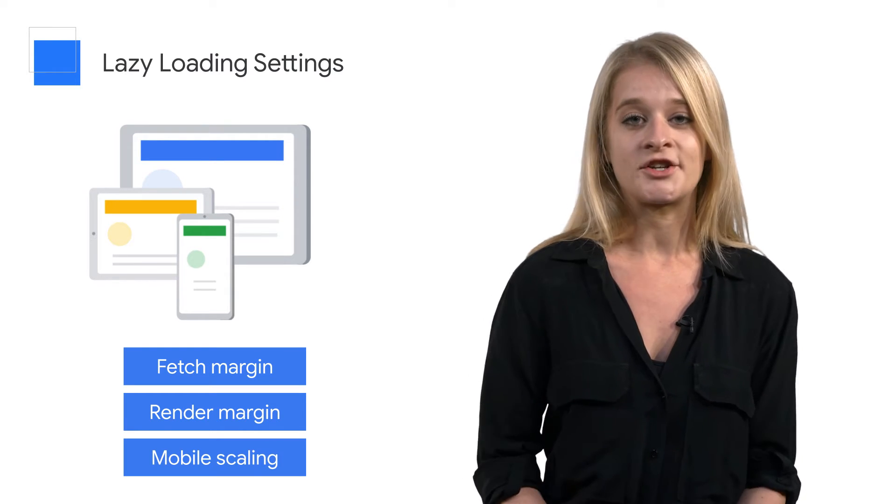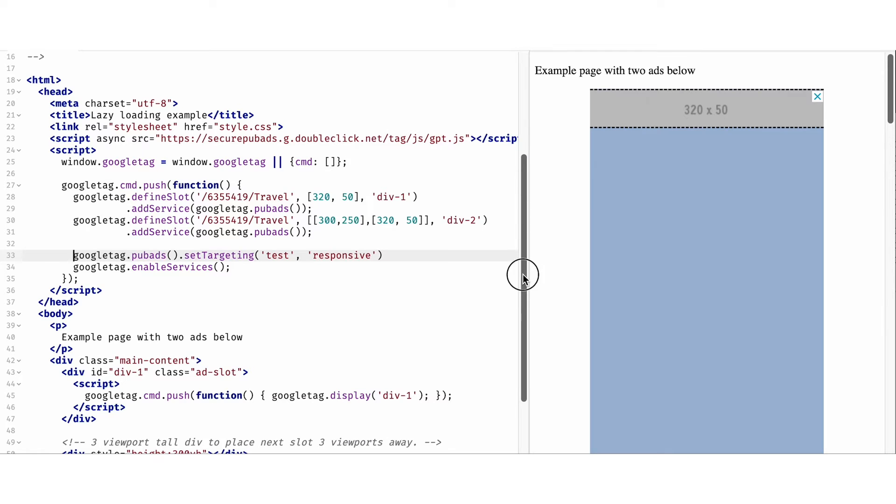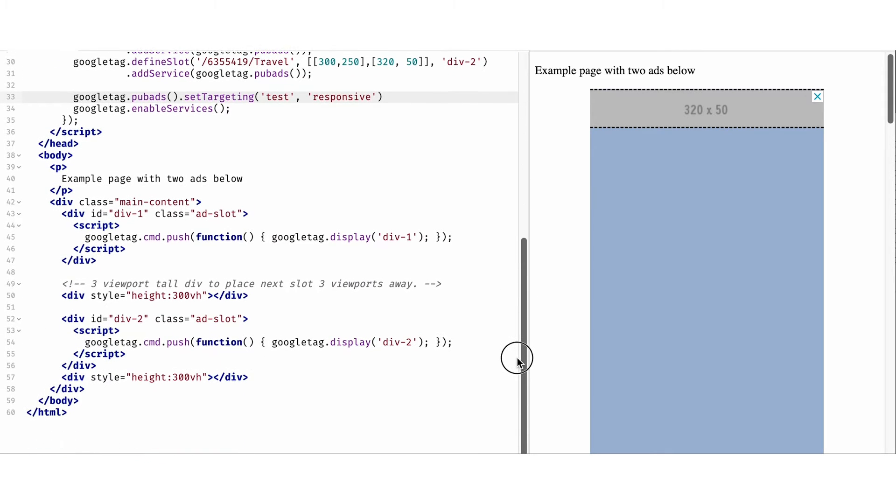So, let's get to the actual implementation of enable lazy load in Google Publisher Tag. To enable lazy loading for your site, you'll need to edit the JavaScript code that you already have to set off ads. You won't need to do any work in Google Ad Manager directly. Here, you can see an example for a page with 2 ad slots.